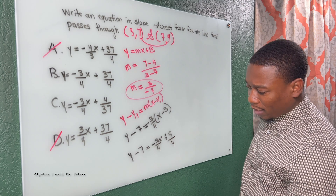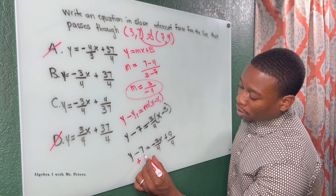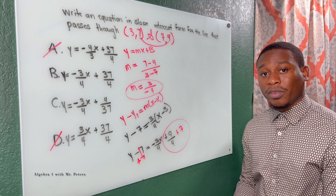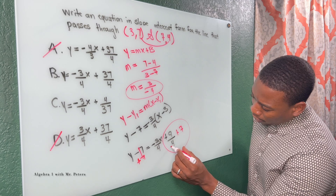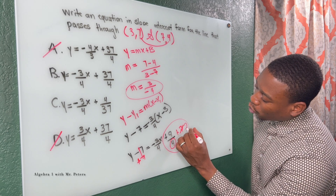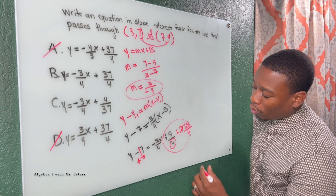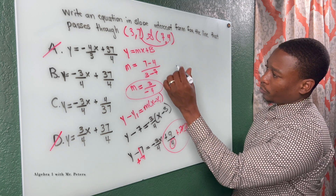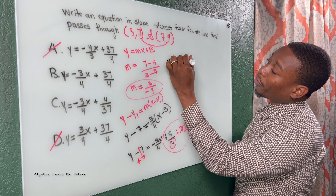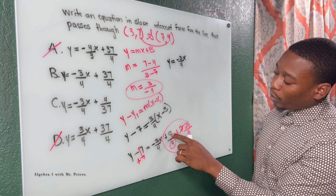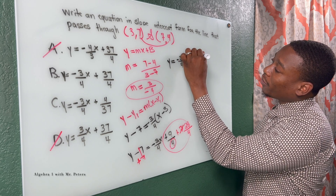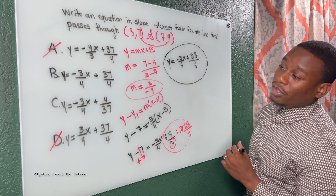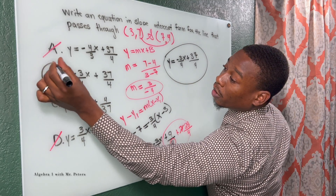We're almost done. The last thing we need to do is combine our like terms. So I add 7 to both sides. Remember that 7, if we want a denominator of 4, we switch this to 28 over 4 — which is the same value of 7. So cleaning this up, y is equal to negative 3 over 4x, and after we add 9 and 28, we get 37 over 4. We don't add or do anything to our denominator. So our answer choice is B.